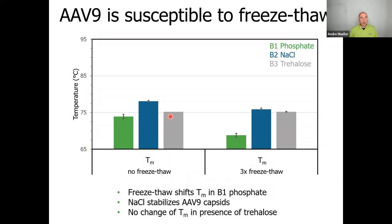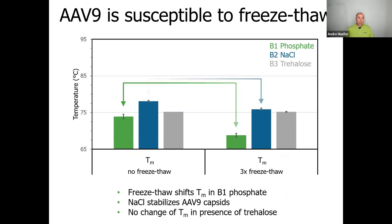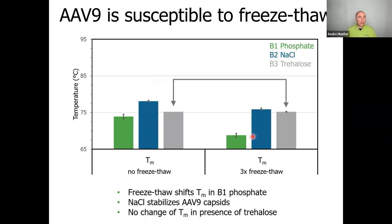Looking at the effect of freeze-thaw cycles on AAV9 — we confirmed that AAV9 has lower melting temperatures compared to AAV5. In the phosphate condition, three freeze-thaw cycles cause a shift in melting temperature of almost 5 degrees. In the sodium chloride condition, there is also a shift to lower temperatures but less severe — about 2 degrees — suggesting sodium chloride has some stabilizing effect. For trehalose, there is no change at all between no freeze-thaw and three freeze-thaw cycles — trehalose acts as a cryoprotectant and fully protects the AAV through these freeze-thaw cycles.